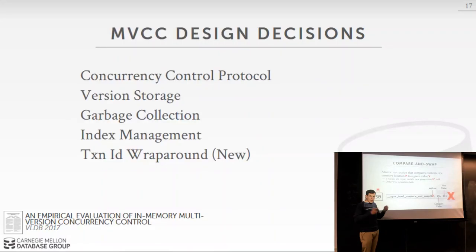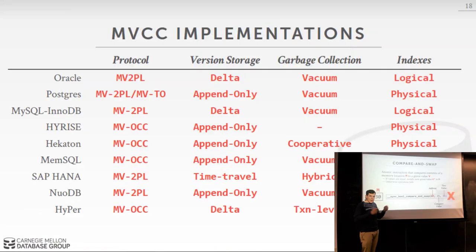The paper covers four main design decisions. I also want to talk about something beyond the paper — how to handle transaction ID wraparound, which is an interesting problem. I know how Postgres handles it, but for the others it's not clear. The table we generated from the paper shows all the different database systems doing MVCC and how they implement those four different design decisions — no two systems implement MVCC exactly the same way.